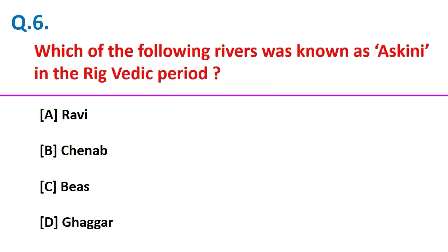Which of the following rivers was known as Askini in the Rig Vedic period? Chenab.